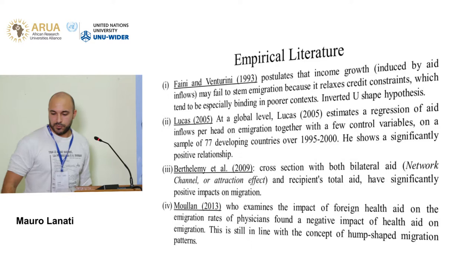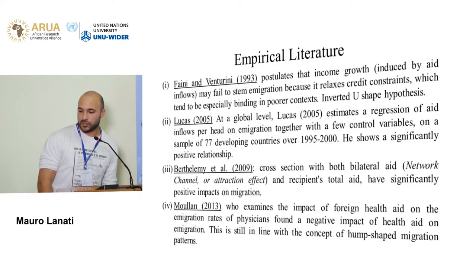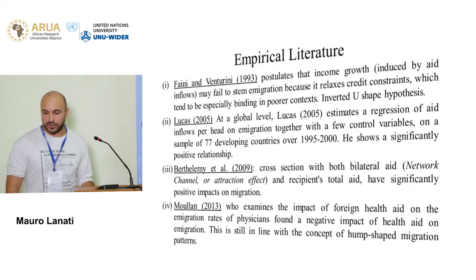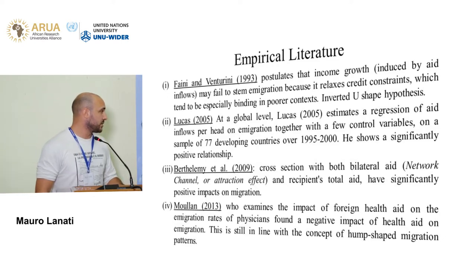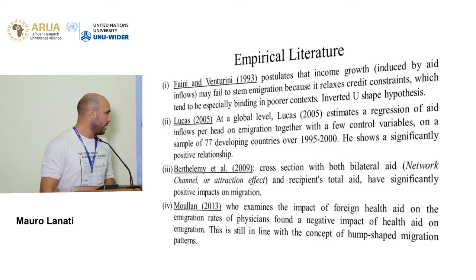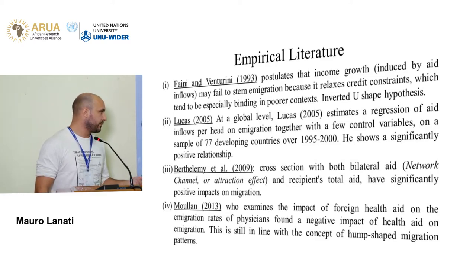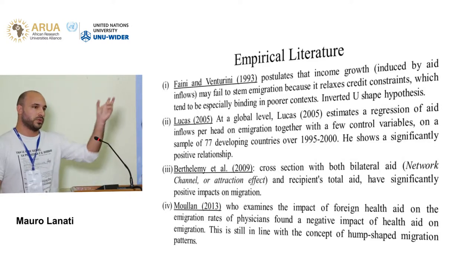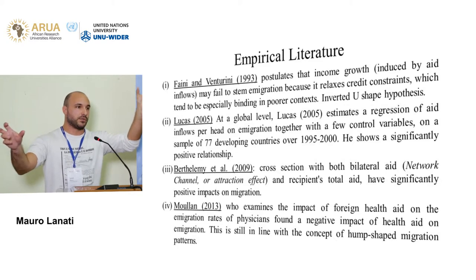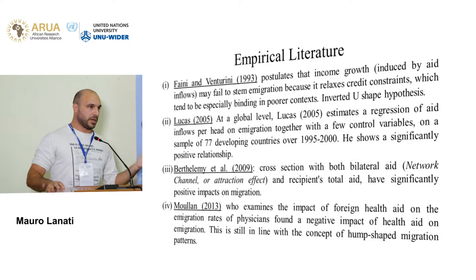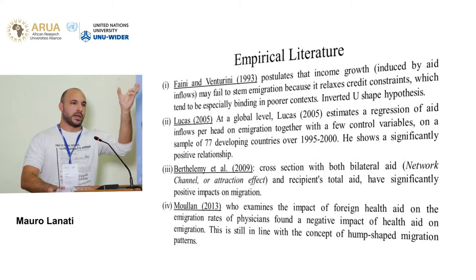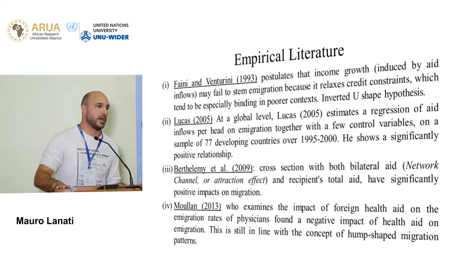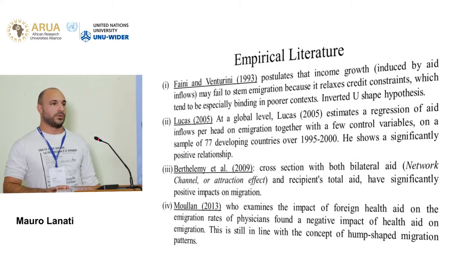Another paper worth mentioning is Barthelemi et al., which is basically a cross-section using both bilateral aid and the recipient's total aid, both of which have a significant positive impact on migration. I mention it because this is going to be the main empirical model — the workhorse — that we use in our empirical analysis. They combine both bilateral aid together with total aid received by the country of origin. The bilateral aid represents a network channel: the idea is that the more bilateral aid, the more contacts between the two countries, so the more information migrants have to move to the country sending the official development assistance.